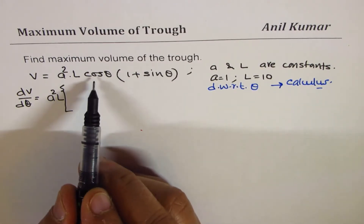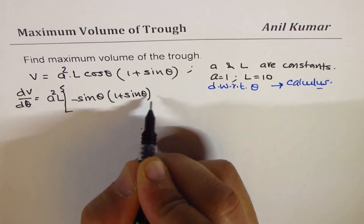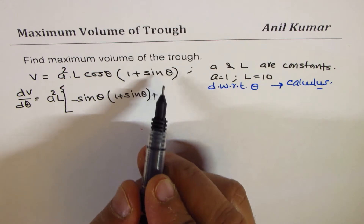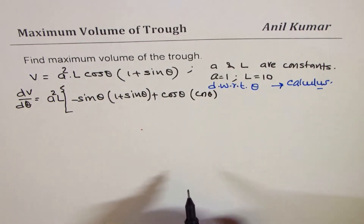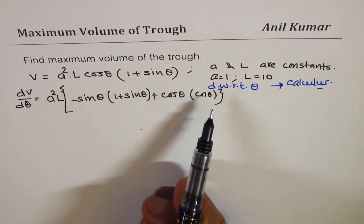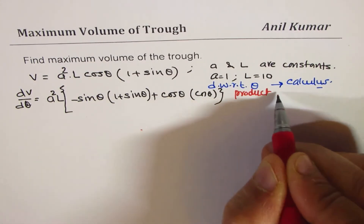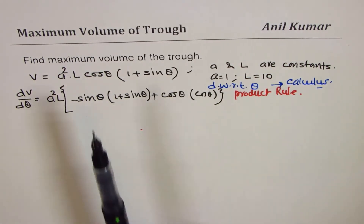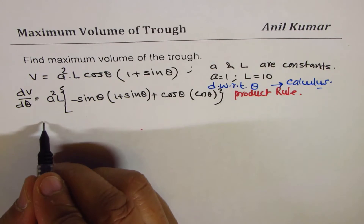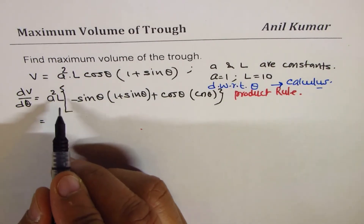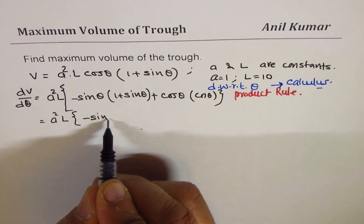The derivative of cos theta is minus sin theta, and the derivative of (1 plus sin theta) is cos theta. So dV/dθ equals a squared L times [minus sin theta (1 plus sin theta) plus cos squared theta]. Expanding the bracket: minus sin theta minus sin squared theta plus cos squared theta.